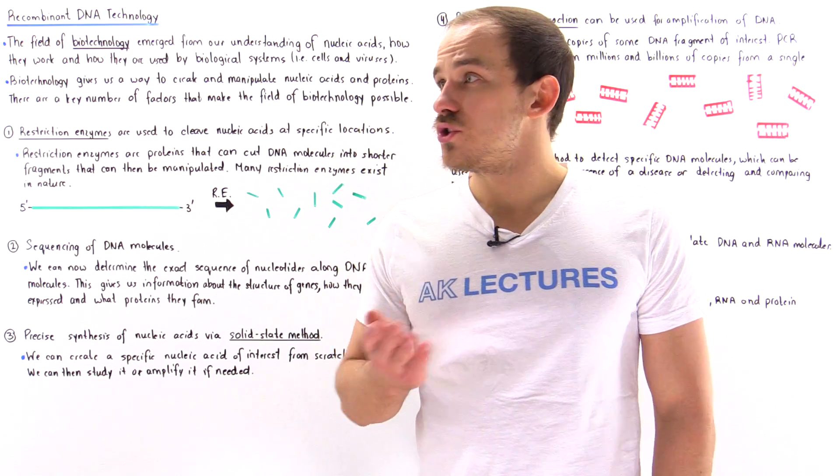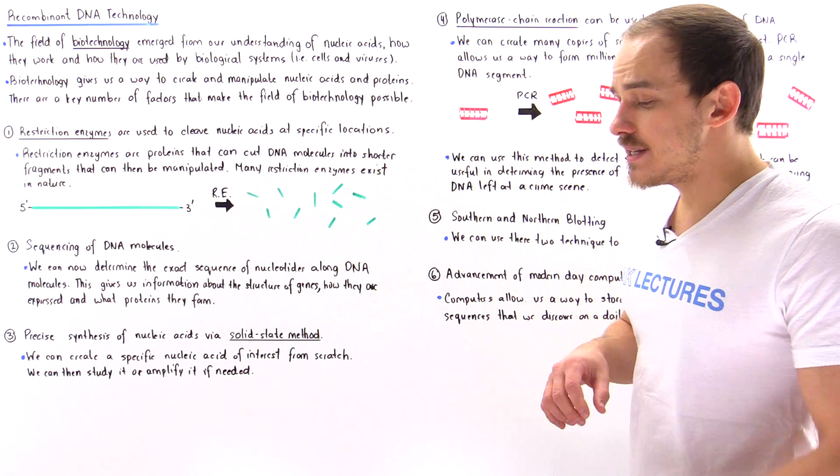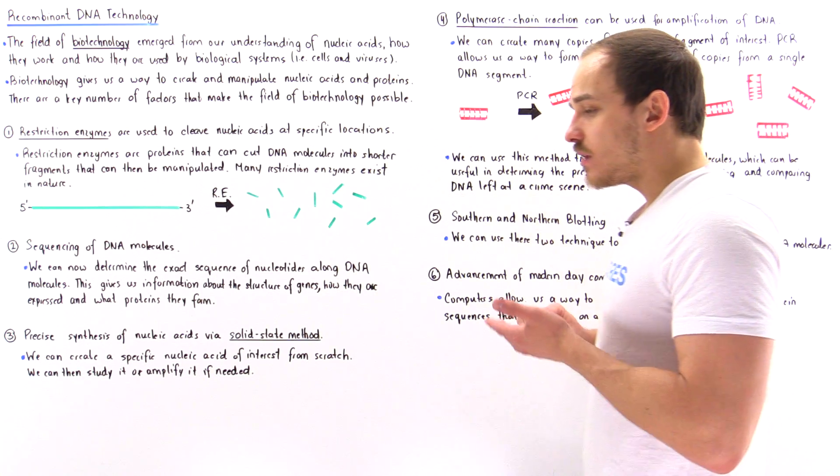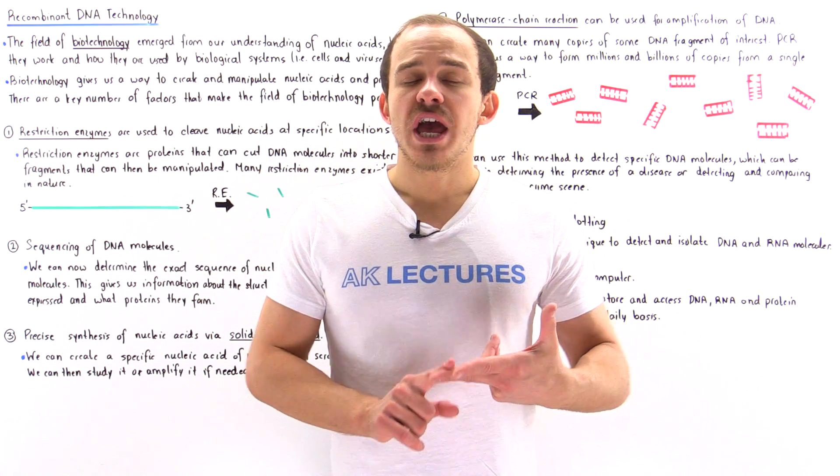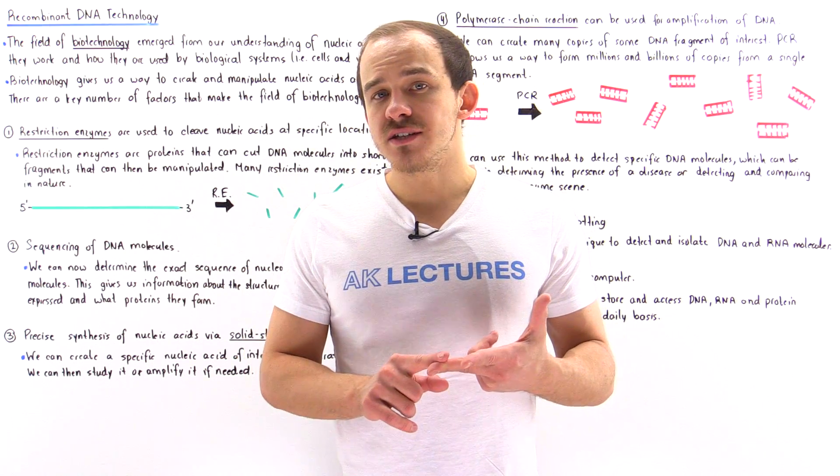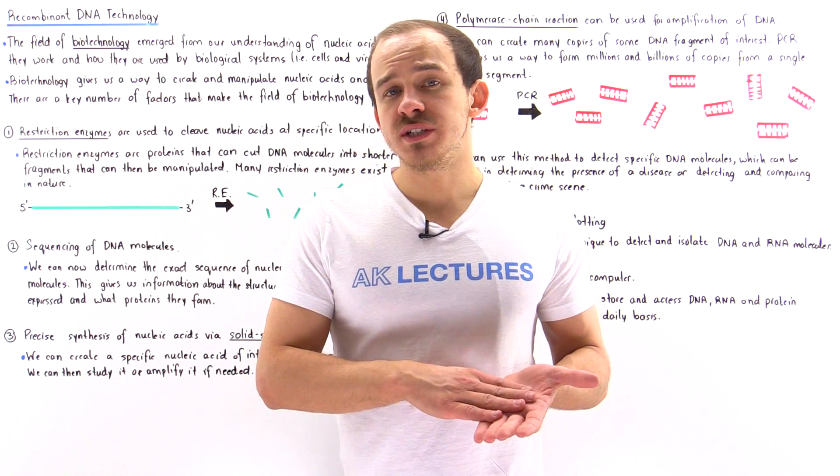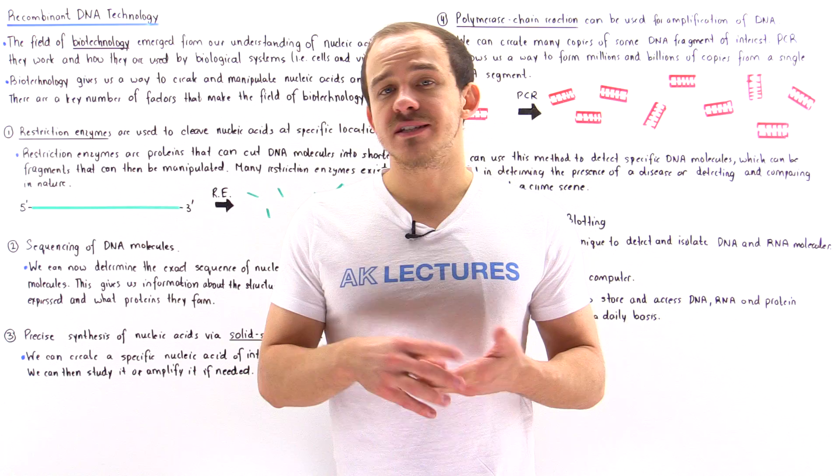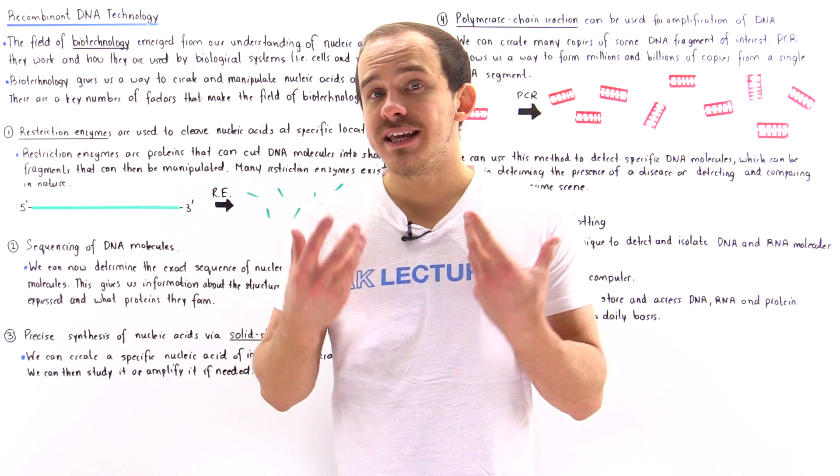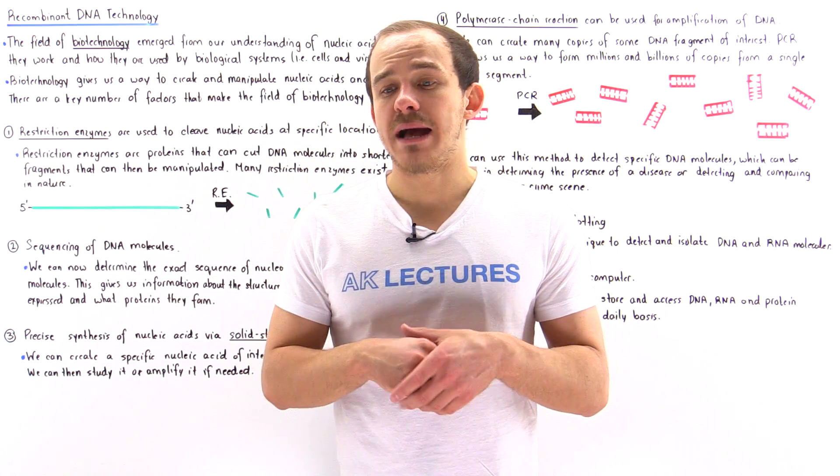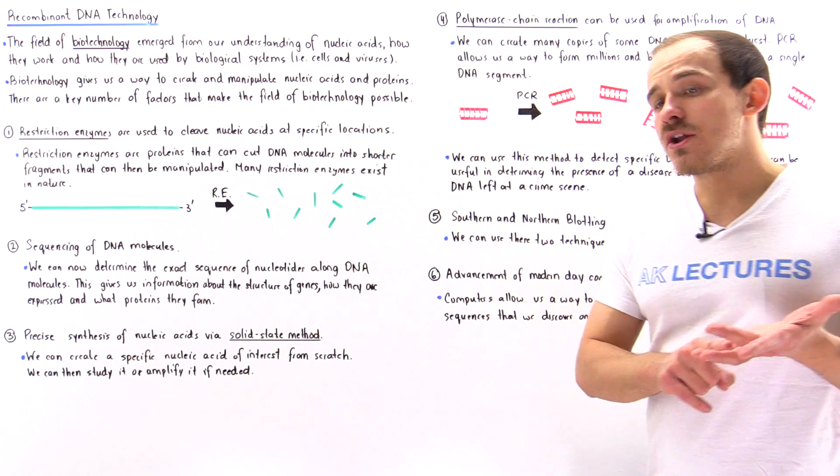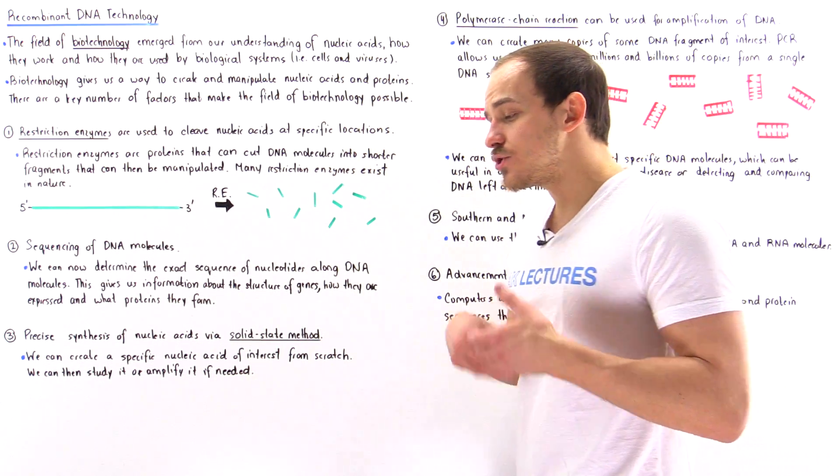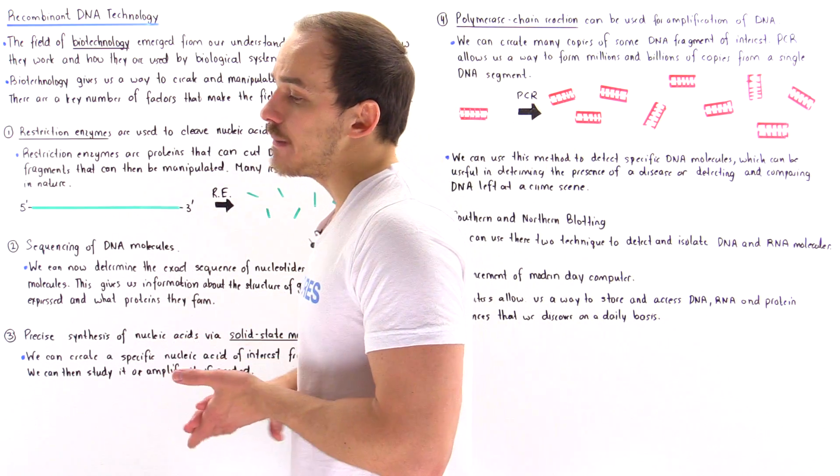The field of biotechnology, also known as recombinant DNA technology, is a field that allows us to study, manipulate, and create nucleic acids. And by creating nucleic acids, we can in turn create the proteins that the nucleic acids actually encode for. And that gives us many, many possibilities and many applications. And that's exactly why biotechnology is not only used in biochemistry, it is also used in many different types of fields.